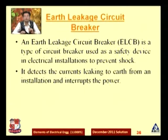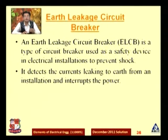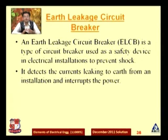In some areas the earth may get some potential, and due to that potential difference the current may leak. What ELCB will do is detect the current leaking to the earth from an installation — meaning installed appliances — and interrupt the power. There is a certain mechanism and working model of ELCB we will see with the circuit diagram.